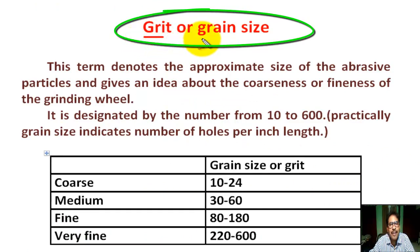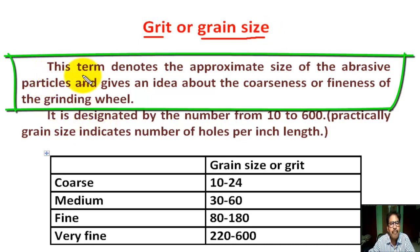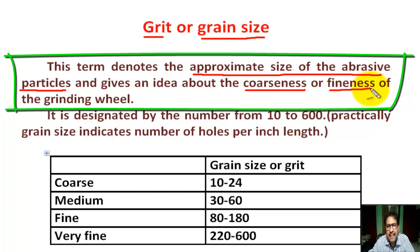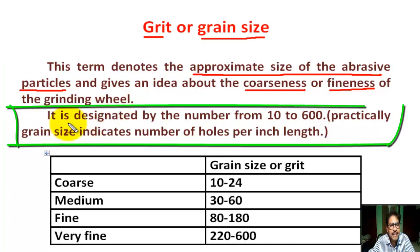What is grit or grain size? This term denotes the approximate size of the abrasive particles and gives an idea about the coarseness or fineness of the grinding wheel. It is designated by a number from 10 to 600. Grain size indicates the number of holes per inch length.